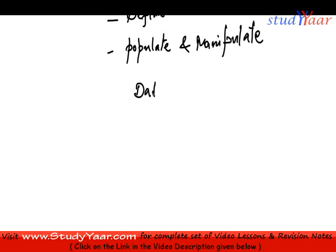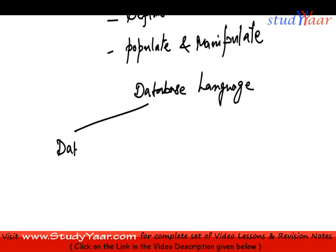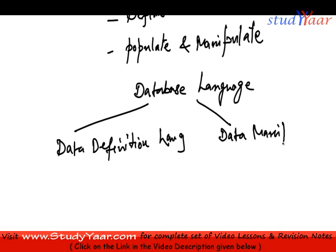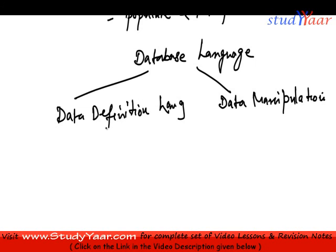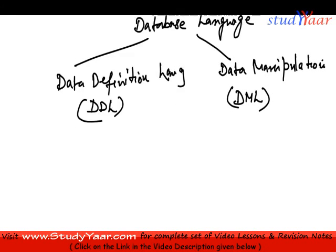On the basis of this, the database language is broadly categorized into two sets of languages. We have something called Data Definition Language and we have something called Data Manipulation Language. The short forms are DDL for Data Definition Language and DML for Data Manipulation Language. I will refer to them as DDL and DML.